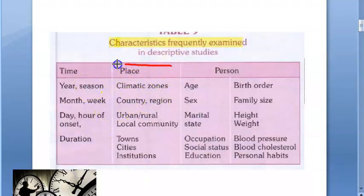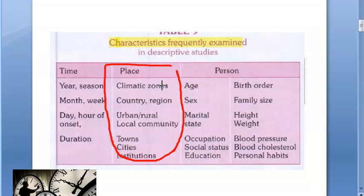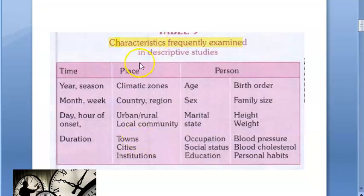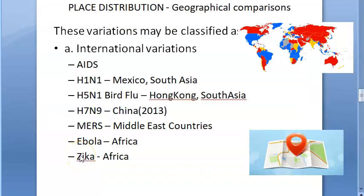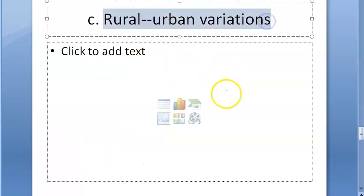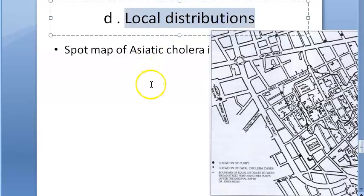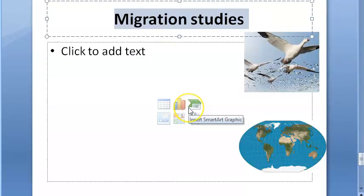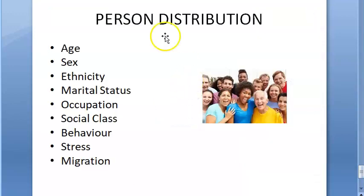Place distribution covers climatic zones like temperate and tropical zones, countries, regions, urban and rural areas, local communities, towns, cities, and institutions. Place distribution is also called geographical distribution. The four main categories are: international variations, national variations, urban-rural variations, and local distributions. We will also cover migration studies.